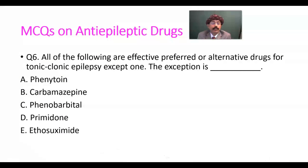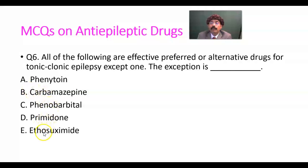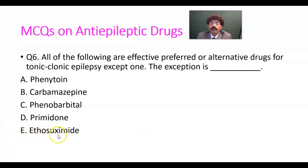Question number six: all of the following are effective preferred or alternative drugs for tonic-clonic epilepsy, except one. The exception is what? Phenytoin, carbamazepine, phenobarbital, primidone, ethosuximide. The answer is E — ethosuximide. All other drugs listed are useful in tonic-clonic epilepsy; ethosuximide is the exception.